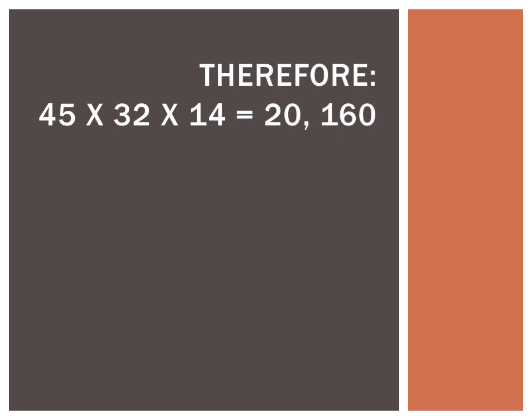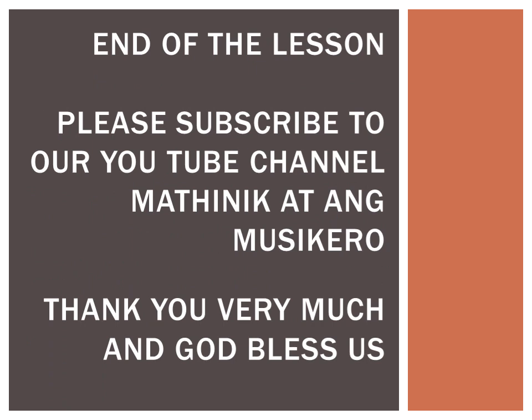And even if you will check for the product if it is really correct by using a calculator, the product is just the same and it is really definitely correct. This only shows that multiplying three numbers having two digits each is not impossible. And that is the end of our discussion for today. Please subscribe to our YouTube channel. Thank you very much and God bless us all.